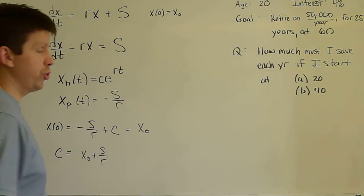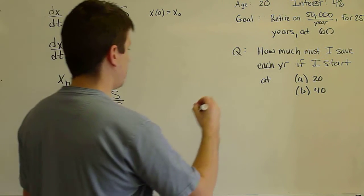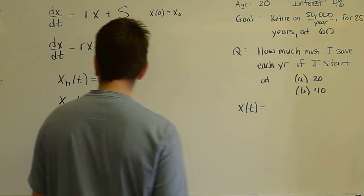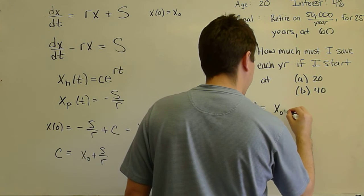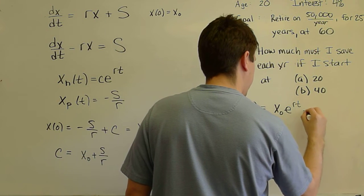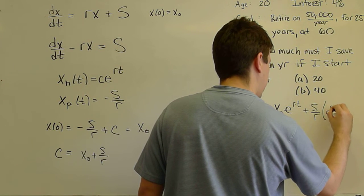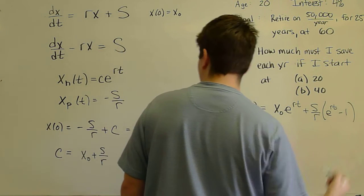We find that C = X₀ + S/r. And so I'll go ahead and write over here now the general solution of this ordinary differential equation. X(t) = X₀e^(rt) + (S/r)(e^(rt) - 1).